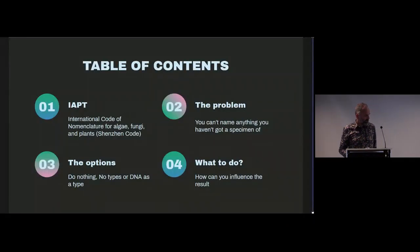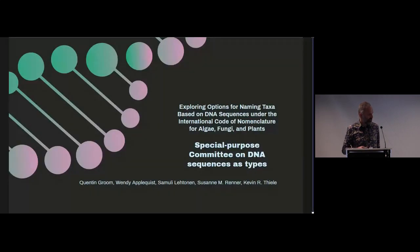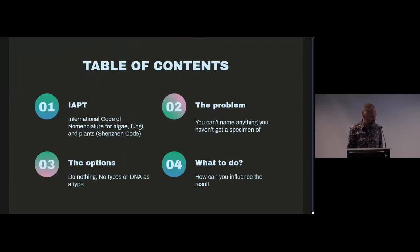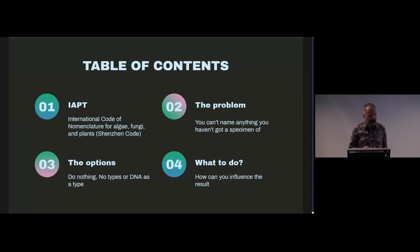So now for something a little bit different, something with a nucleus. Maria gave a great introduction to some of the problems I'm going to talk about, but I'm going to talk about naming taxa based on DNA sequences. We've just heard of the issues around prokaryotic sequence, but I'm going to talk about the International Code for Nomenclature for Algae, Fungi, and Plants. I'll talk a little bit about the International Association of Plant Taxonomy, a little bit about the problem we're trying to solve, the options we have for doing this, and what you could potentially do to help it all happen.